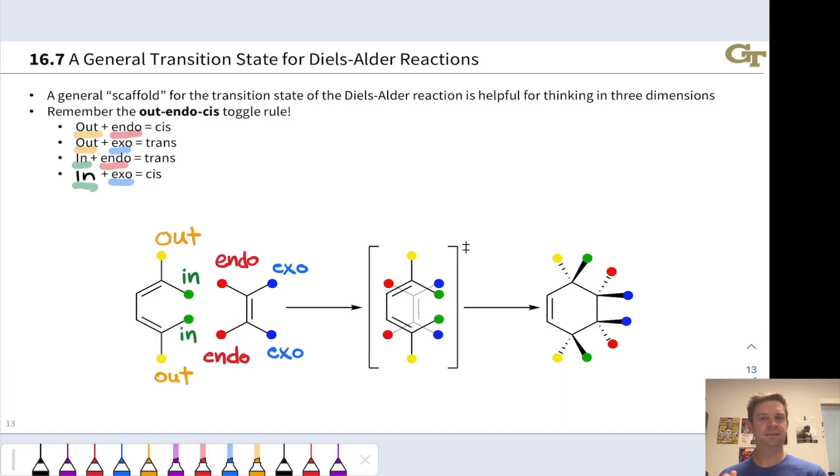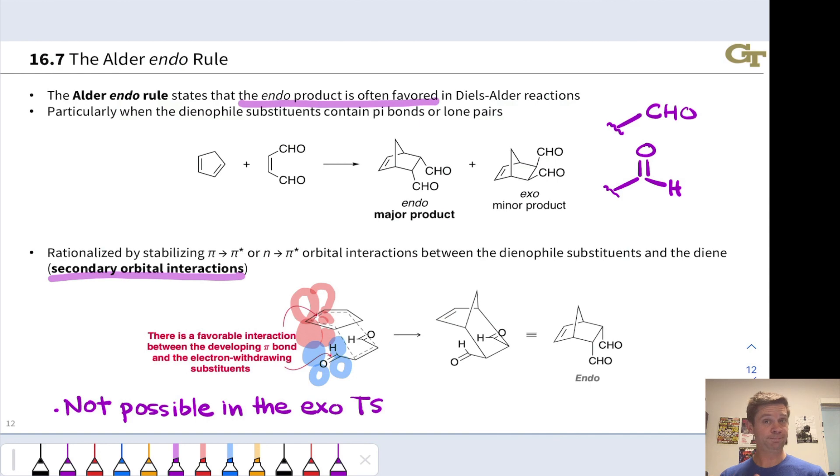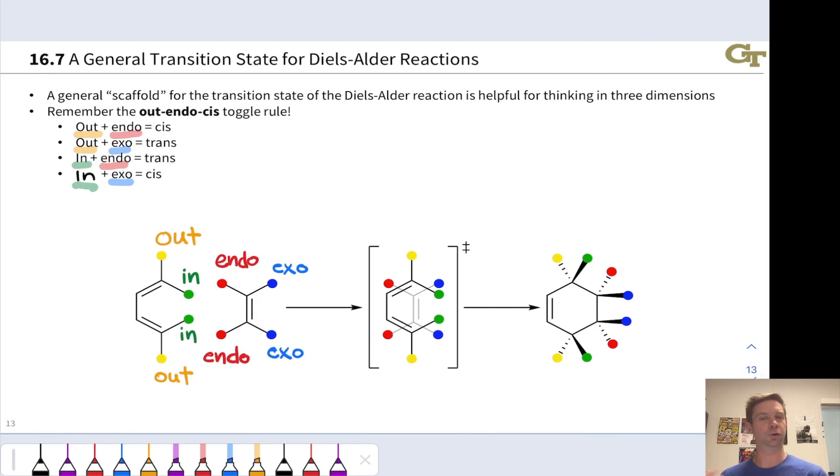So you can combine this toggle rule with the Alder endo rule, which says if you've got pi bond or lone pair containing substituents, those will go endo. That allows you to orient the dienophile. You can combine that idea from the previous slide with the out-endo-cis rule to draw a complete Diels-Alder product with stereochemistry just from the structures of the reactants.